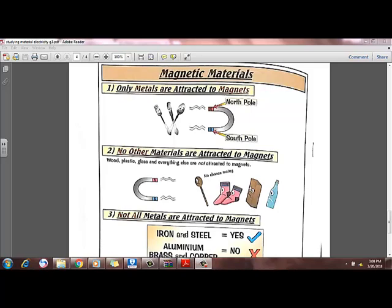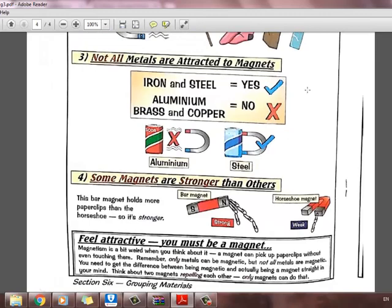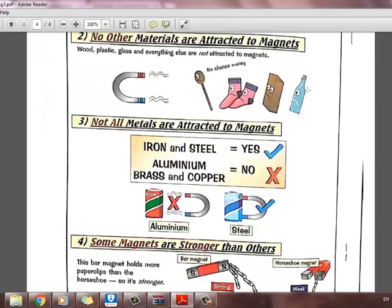While aluminum, brass, and copper do not attract to the magnet.